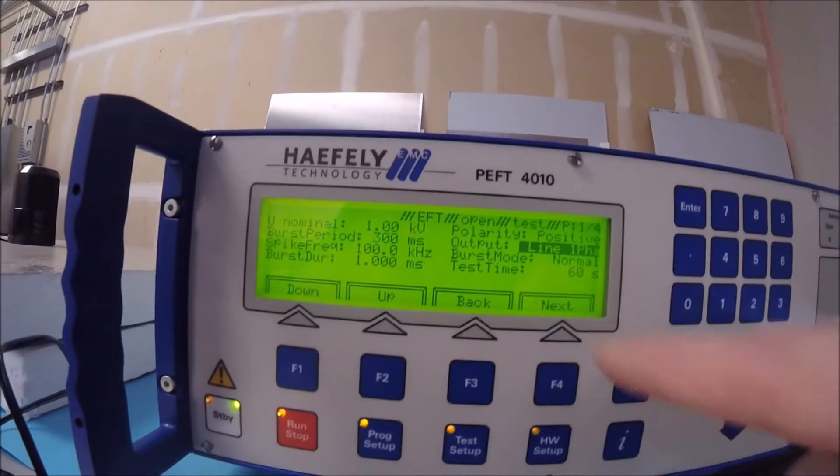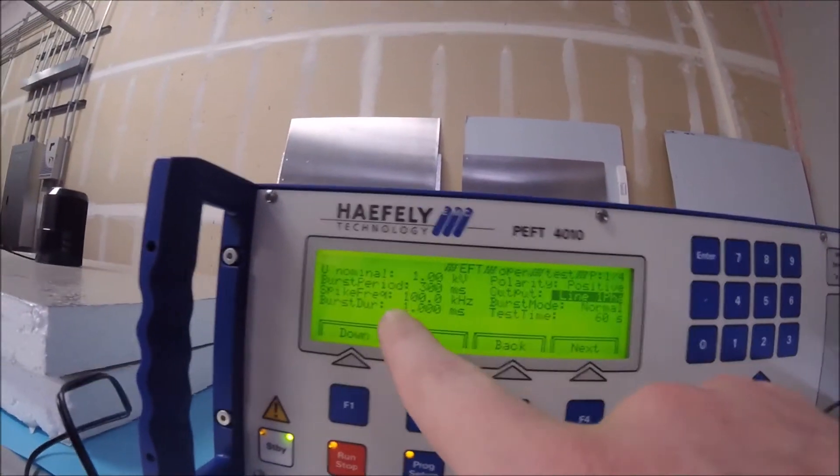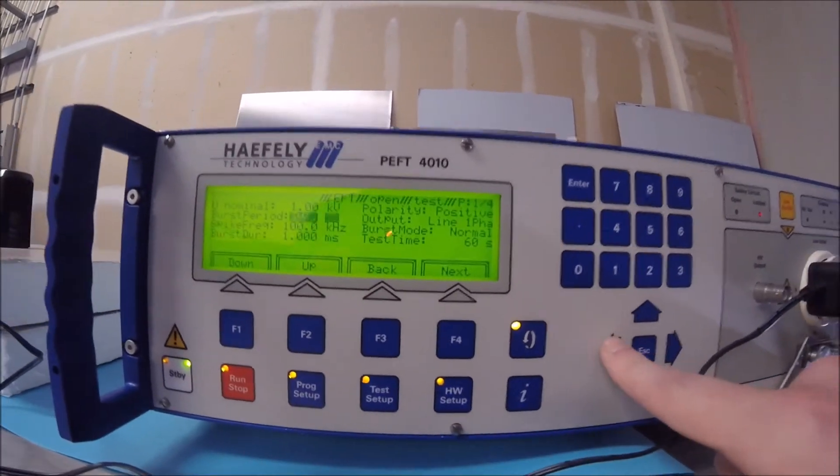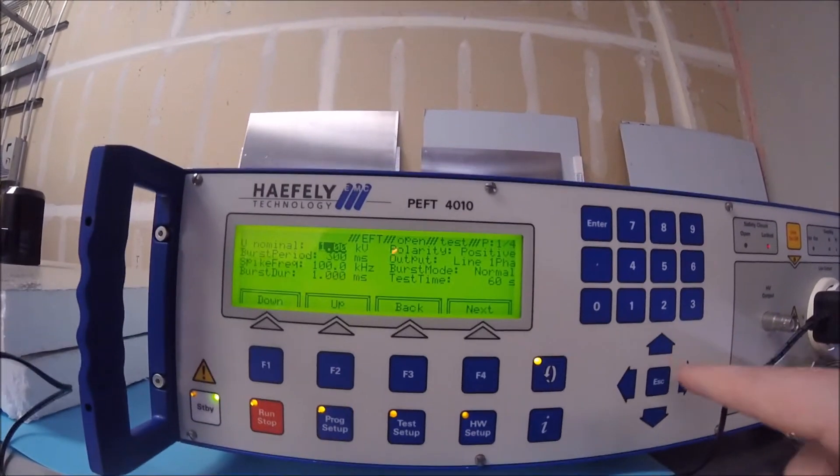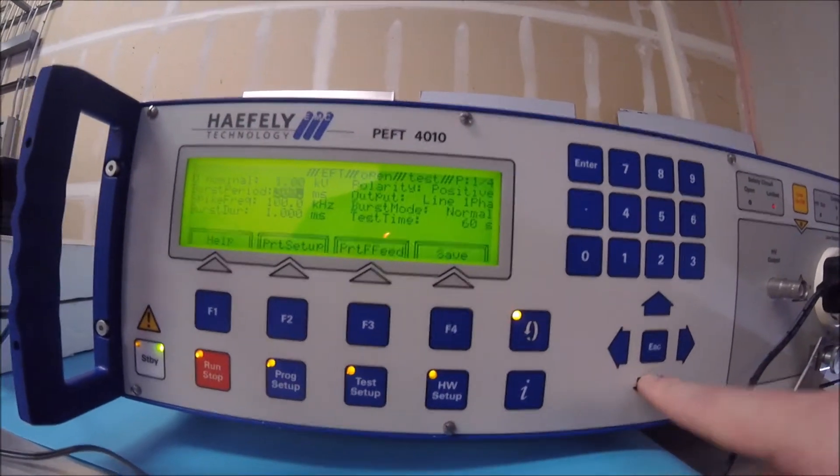Set up your test sequence per the parameters called out in your product standard. Most revolving around 5kHz pulses over 15ms duration or 100kHz pulses over 300ms duration. A 60 second test will perform enough random pulsing to satisfy real world scenarios.